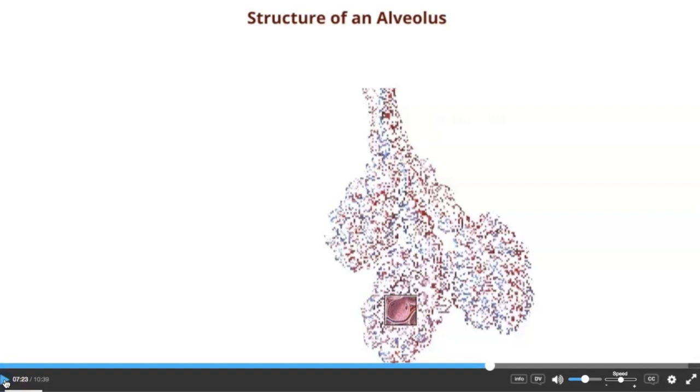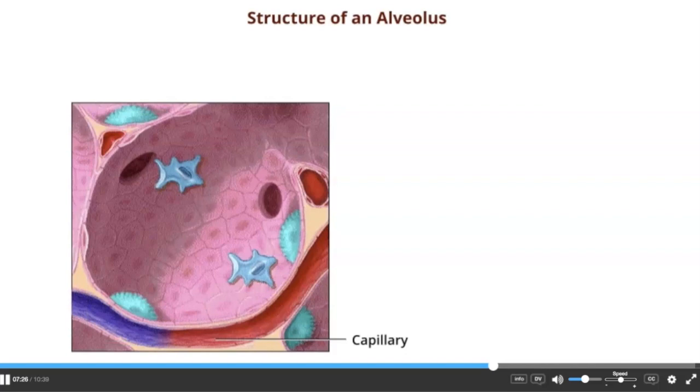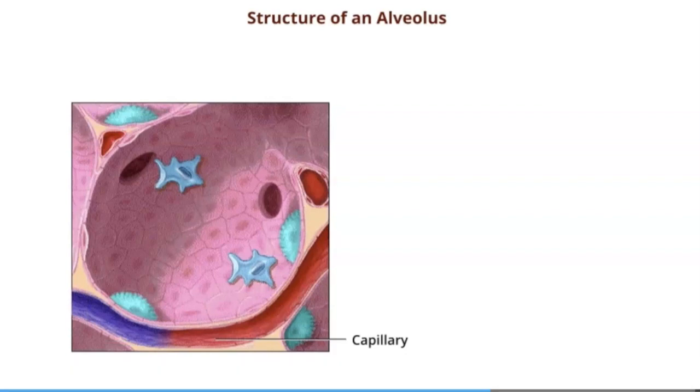Let's take a look at the cellular structure of a single alveolus. Notice that there's a blood supply for every single alveolus. There are three cell types: